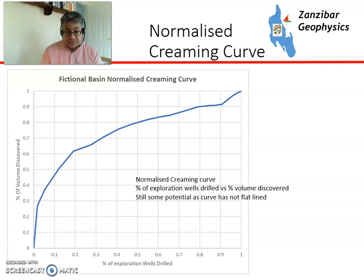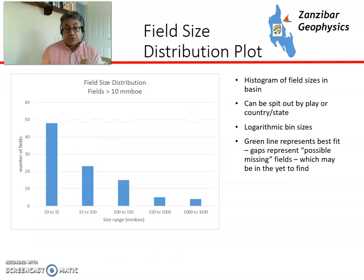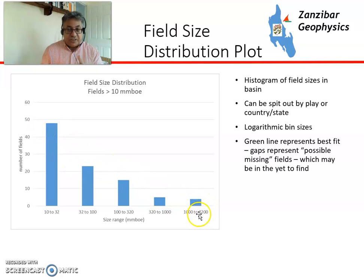Then this is the normalized creaming curve. This is a red-type basin — high initial growth but continual growth all the way through. It's not a gamma, and therefore this is still a good basin to be in. Then you have field size distribution — a histogram on a log-normal scale with logarithmic bins. You've got quite a lot of very small fields and then a few large fields across the size range. This looks fairly idealized; real basins tend to have quite a lot more heterogeneity.